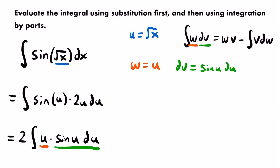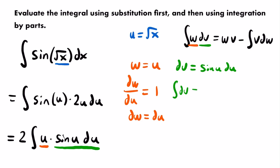Now we find v and dw. Taking the derivative of w with respect to u: dw/du = 1, since the derivative of u is 1. Multiplying both sides by du gives dw = du. To find v, we integrate dv: the integral of sin(u) du equals negative cosine of u. So v = -cos(u). Now we have all four pieces — w, dv, v, and dw — needed to apply the integration by parts formula.